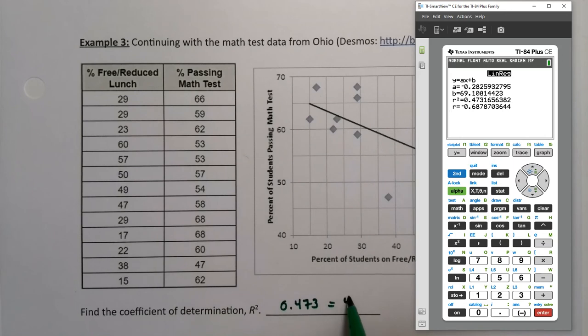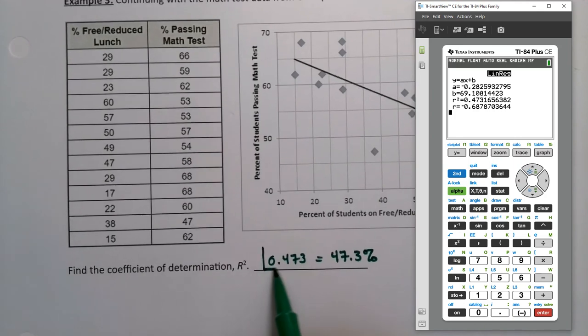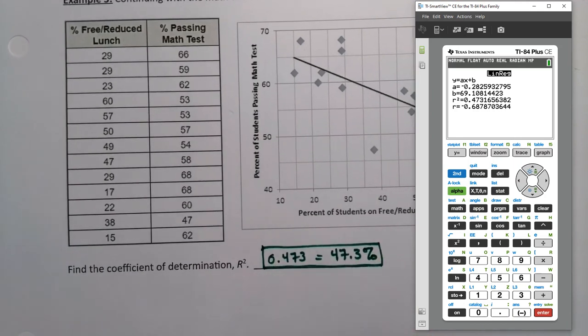We often write it as a percentage. So you can write 47.3, but then you have to put a percent sign next to it. Either one of those is fine. Now in StatCrunch you found it as well, but of course StatCrunch has a huge output, so you'll have to know where to look.